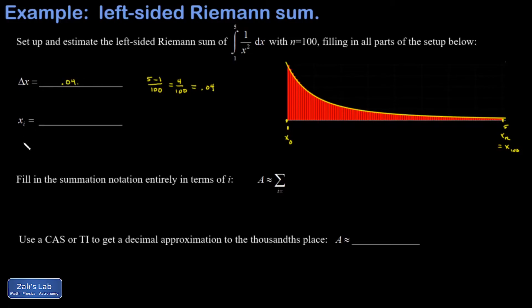And then xi is a notation for the i-th cut point, and that's the starting position x0 plus i steps to the right. So the starting position in this case is 1 plus i steps to the right. And the step size is delta x, which we already computed. So this looks like 1 plus 0.04i.